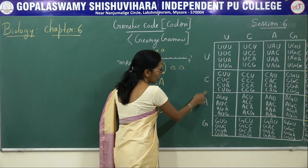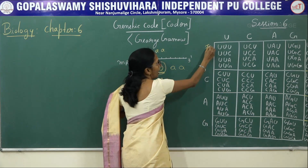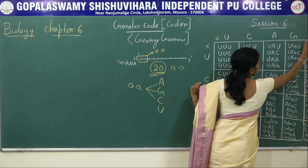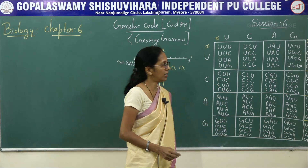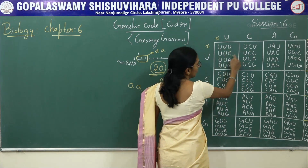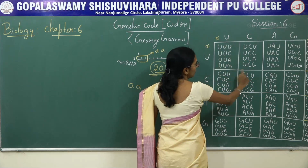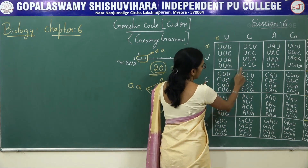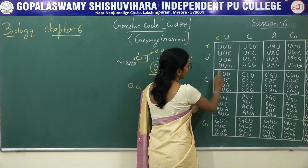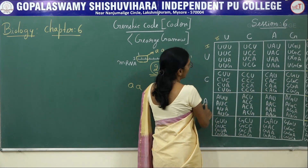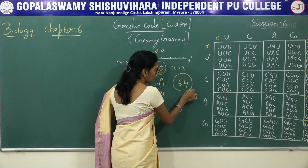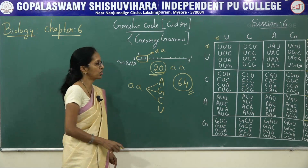These combinations represent nitrogen bases: first letter, second letter, and third letter. For example, UUU, UUC, UUA, UUG — then CCU, and so on. Similarly, AUU and others follow the same pattern. So totally we have 64 different codons, which is more than sufficient for the coding process.